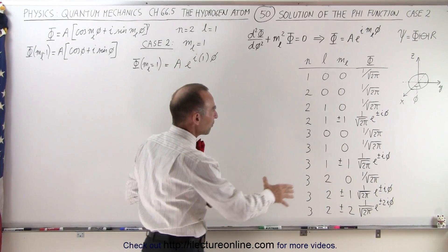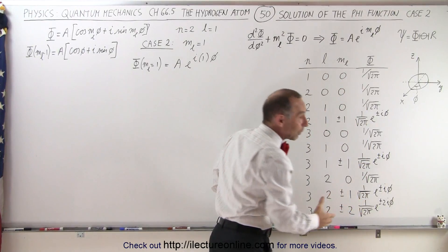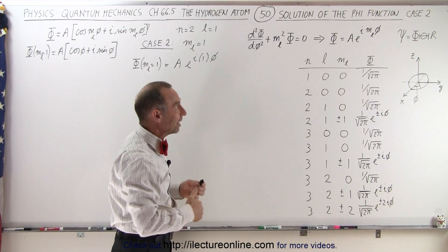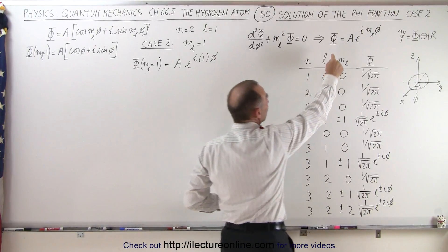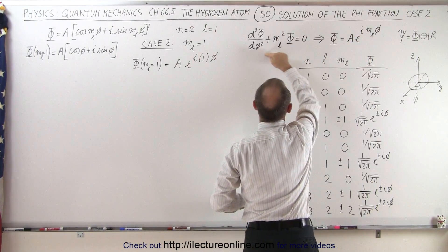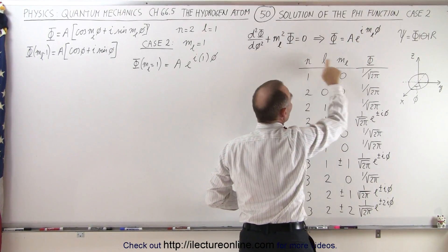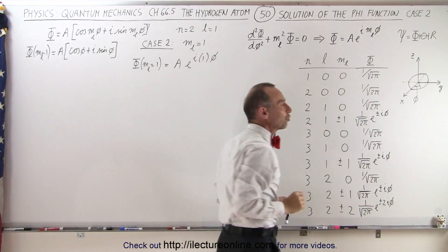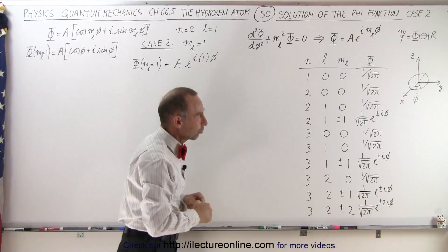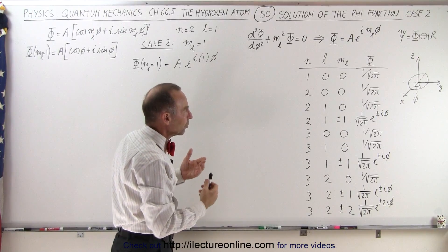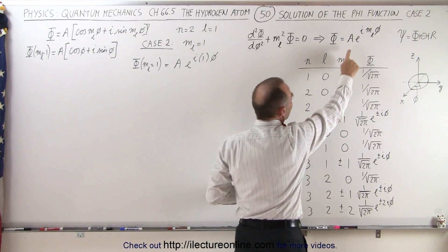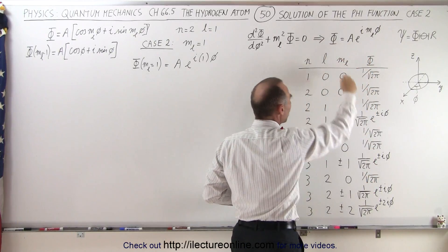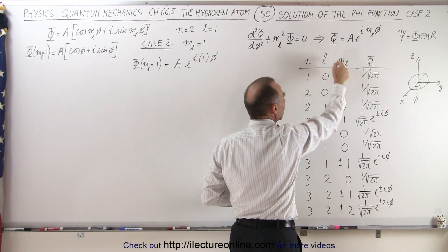You can see that we've already put these solutions on here. What we're going to do is show you how we obtain these solutions. We have the general solution to the differential equation for the function that gives us the azimuth direction portion of the solution to the Schrödinger equation, but we're going to get different values for the constant A depending upon what values we have for n, l, and m sub l.